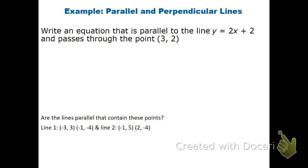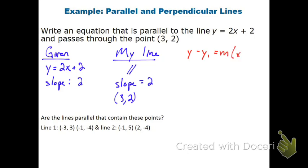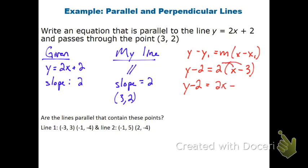For this first one, I want to find the equation that's parallel to the line. The given information is y equals 2x plus 2, and the slope of that line is 2. Since I want my line to be parallel, I want it to have a slope of 2 as well, and go through the ordered pair (3, 2). I plug into y minus y₁ equals m times (x minus x₁): y minus 2 equals 2(x minus 3). Distributing: y minus 2 equals 2x minus 6. Adding 2 to the other side gives y equals 2x minus 4.